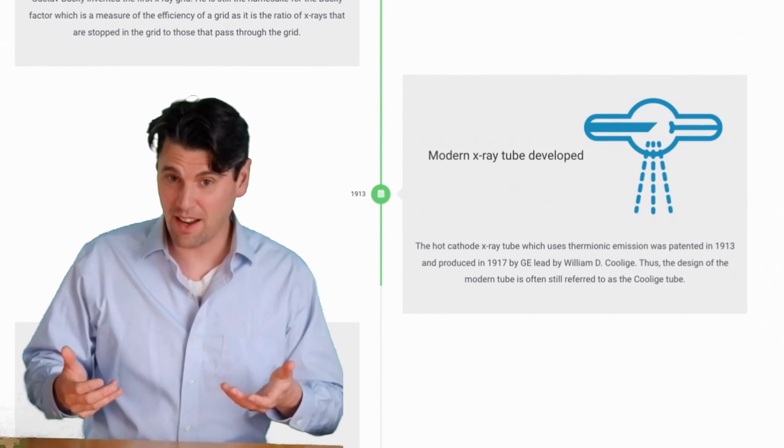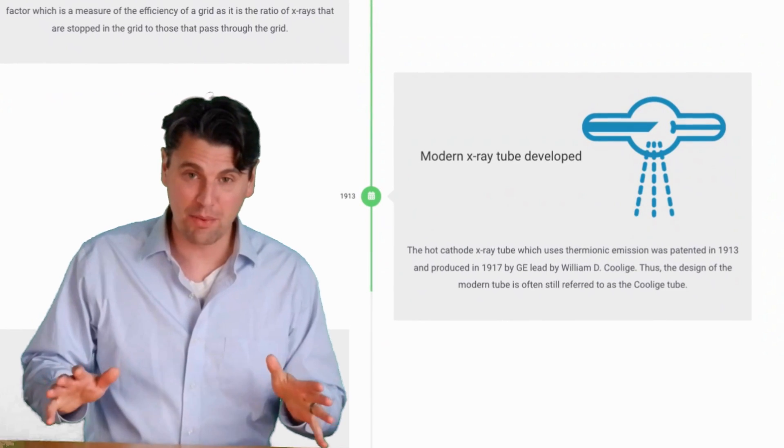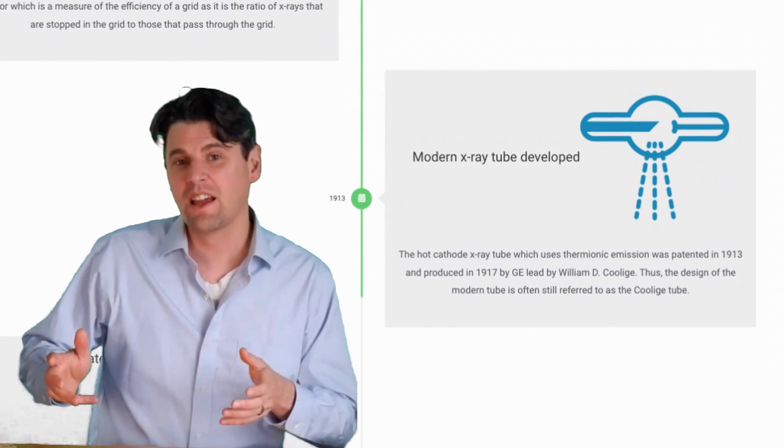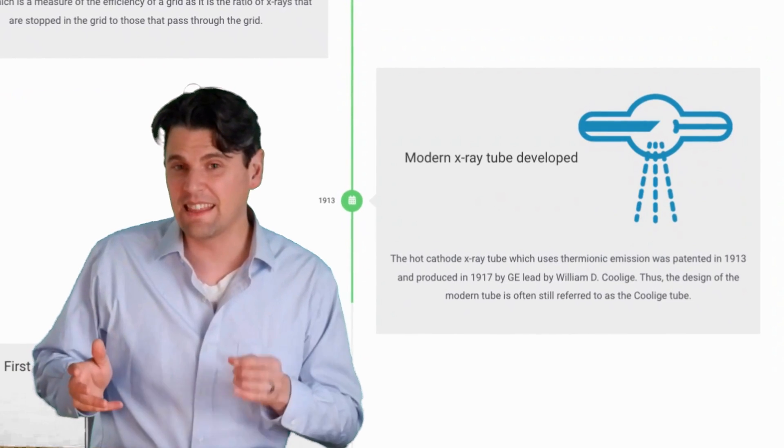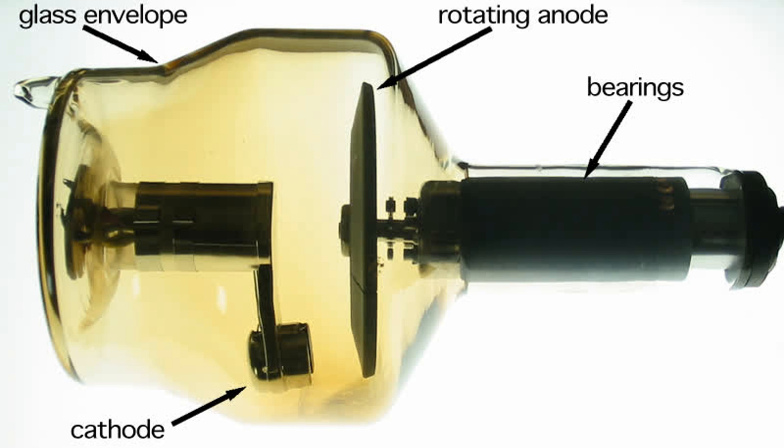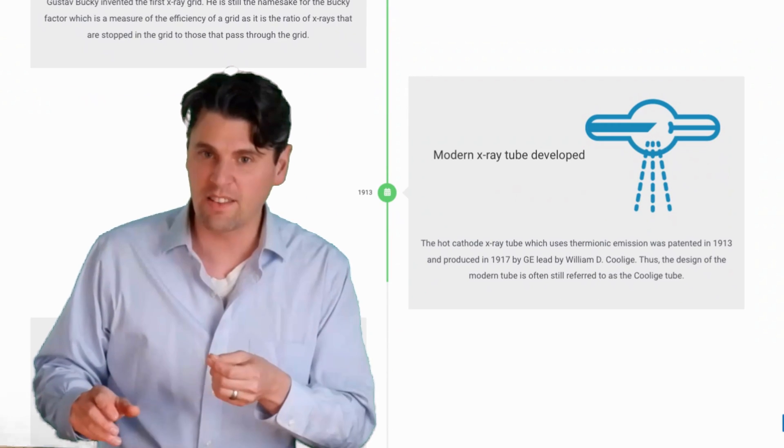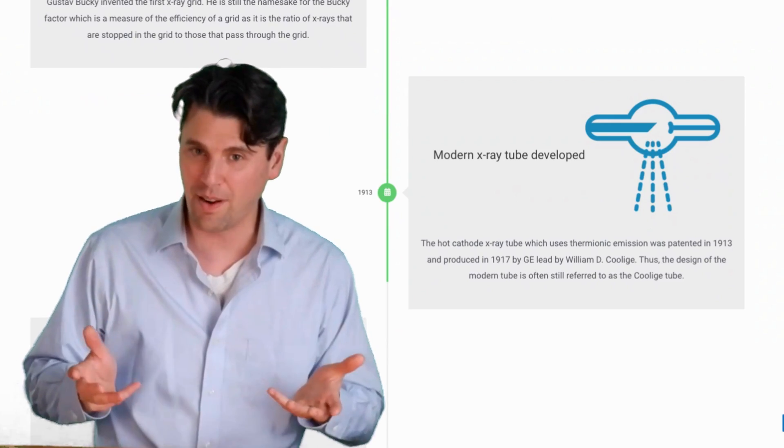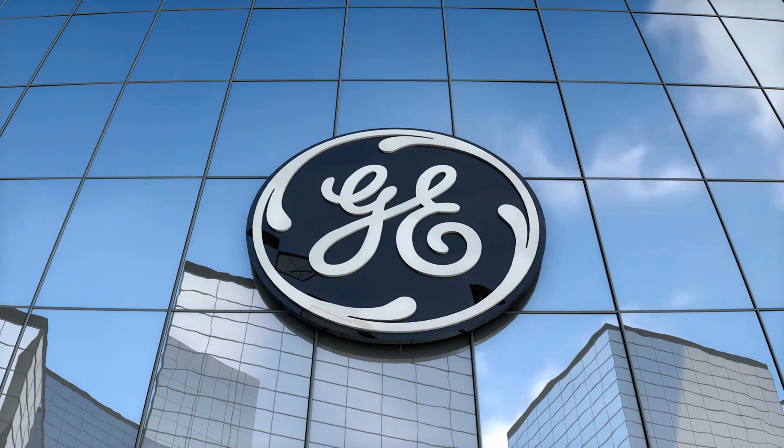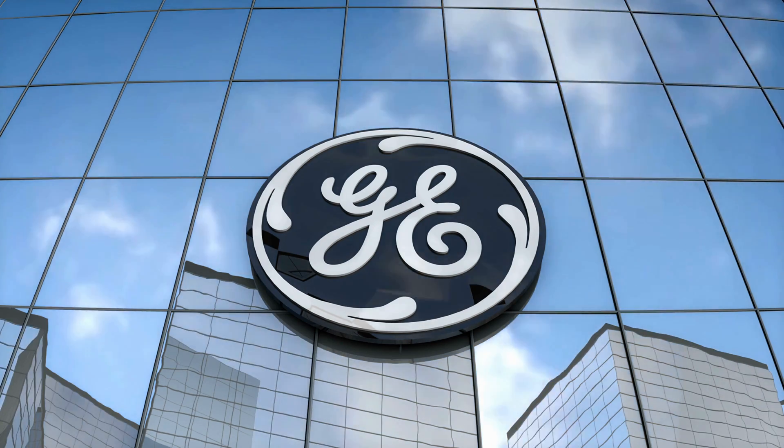The biggest advance in X-ray tube technology, possibly of all time, is actually the fact that you can heat the cathode or the source of the electrons. Heating the cathode, we call it thermionic emission. This allows for you to get more electrons across and for much more stable operation. This was invented by Coolidge while he was at GE.